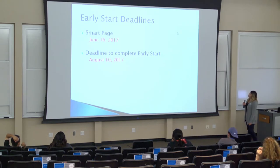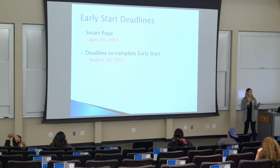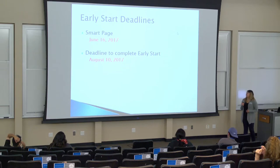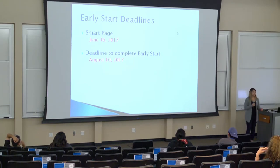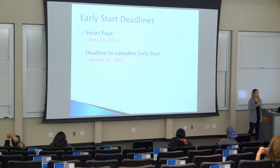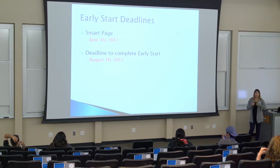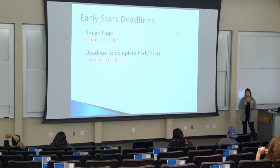For Early Start deadlines: June 16th was the last day to change your choice of school. If you live far away, Cal State San Marcos may be the only school you can attend right now. The deadline to complete the Early Start program is August 10th. Some schools have later Early Start end dates, but those classes cannot be used because we won't have your scores before your first semester.